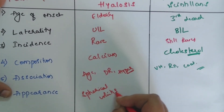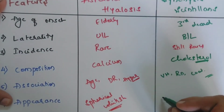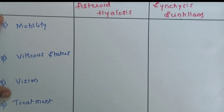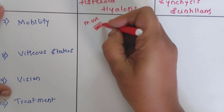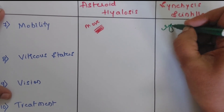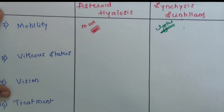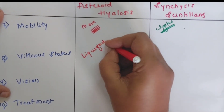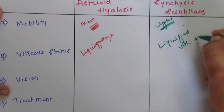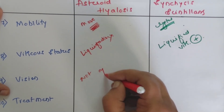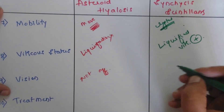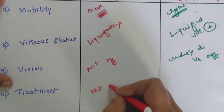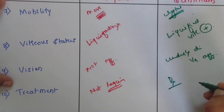Synchisis Scintillans is associated with vitreous hemorrhage, retinal detachment, Coats' disease, hypermature cataract, chronic uveitis, or previous trauma. Appearance: Asteroid Hyalosis appears as spherical whitish crystals in the vitreous, whereas Synchisis Scintillans appears as highly refractile, multicolored, angular or flat crystals in liquefied vitreous. Mobility: In Asteroid Hyalosis, crystals move with eye movement and return to original position; in Synchisis Scintillans, crystals settle down by gravity. Vitreous status: intact in Asteroid Hyalosis, liquefied in Synchisis Scintillans. Vision: usually unaffected in both, though underlying disease in Synchisis may affect vision. Treatment: not required in Asteroid Hyalosis; treat the underlying disease in Synchisis Scintillans.